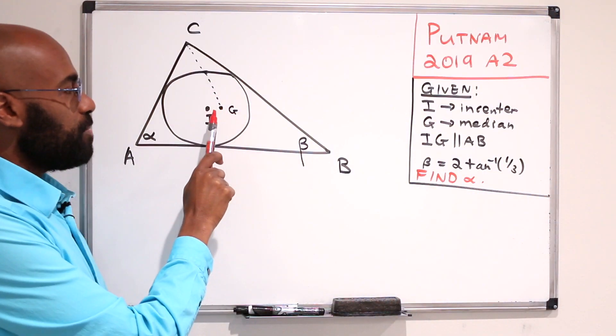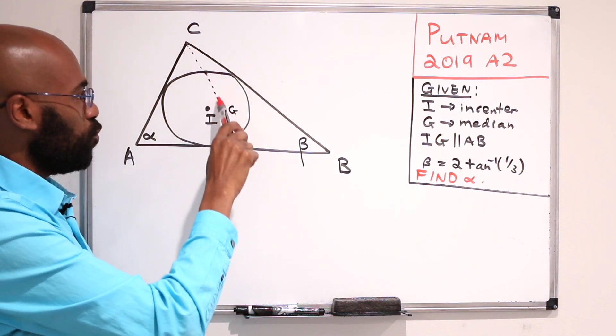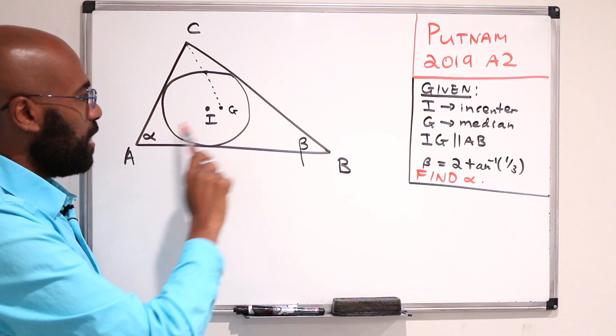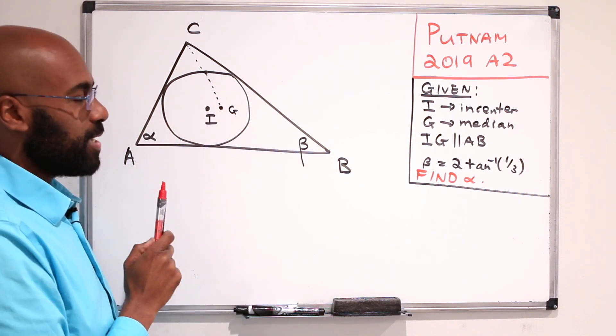And G be the median, which means that if we took this point and drew it to the midpoint of AB and did the same thing with the other vertices that intersect at a point G, that is the median.